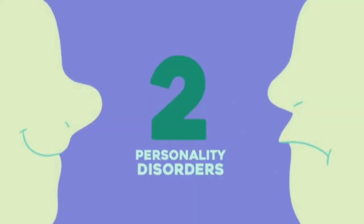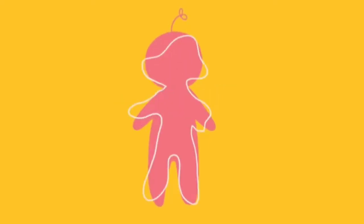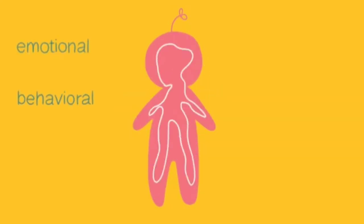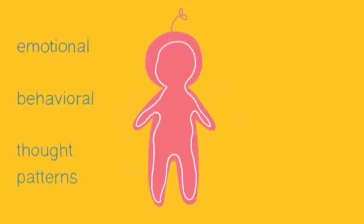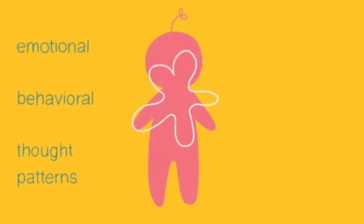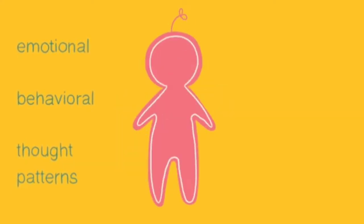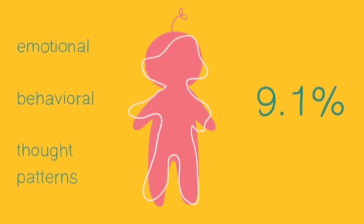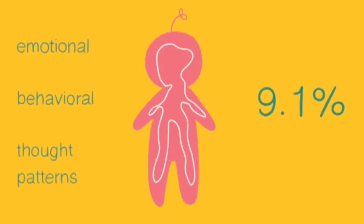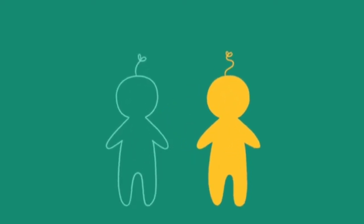Two: Personality Disorders. What does it mean when someone's personality is disordered? Personality disorders refer to behavioral, emotional, and thought patterns that deviate greatly from the expectations of an individual's culture. The National Institute of Mental Health suggests that 9.1% of the population has the traits of a personality disorder. So what does this look like in real life? Could anyone who's a little different be diagnosed with a personality disorder?